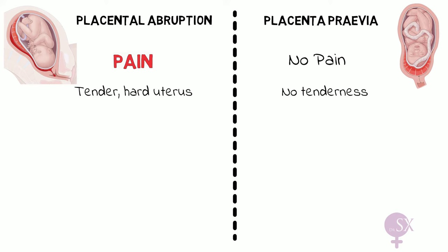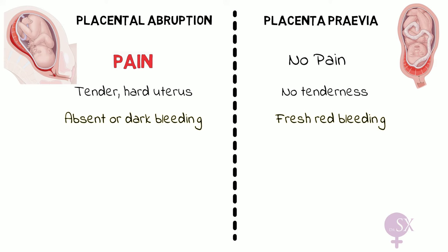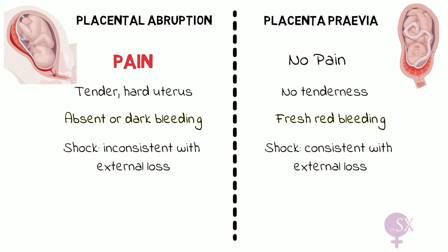In terms of bleeding, there may be absolutely no bleeding in placental abruption if there is a concealed abruption, or there may be small amounts of old dark blood. In placenta previa there is a good amount of fresh red bleeding. Because bleeding may be hidden in a concealed abruption, shock will be inconsistent with the bleeding observed vaginally, while in placenta previa shock will be consistent with the external blood loss.